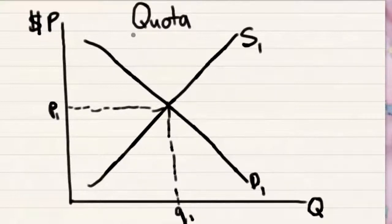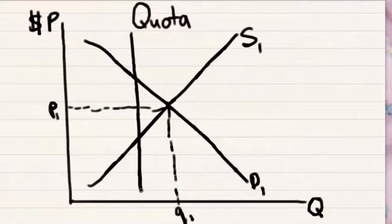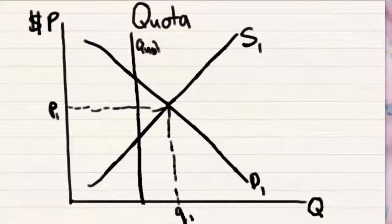So, if we have a quota, what happens is this right here, this quota. So, this quota, this right here becomes the supply curve.